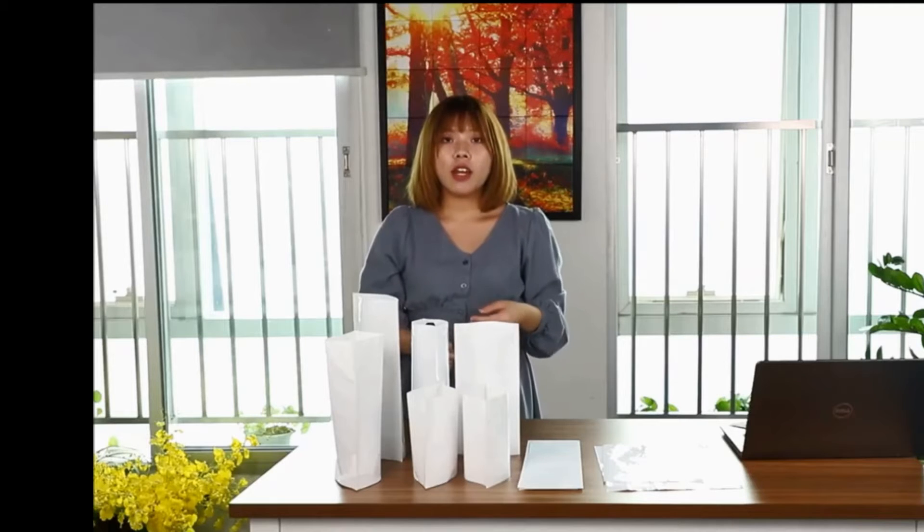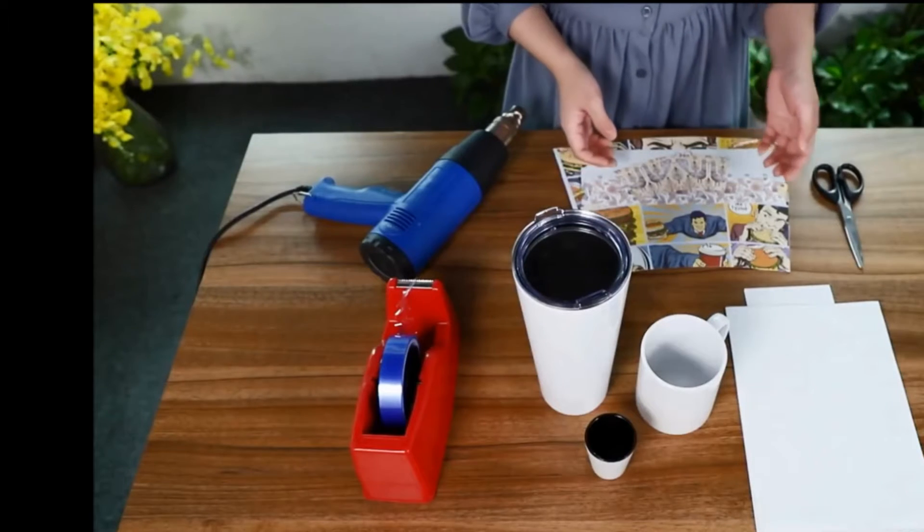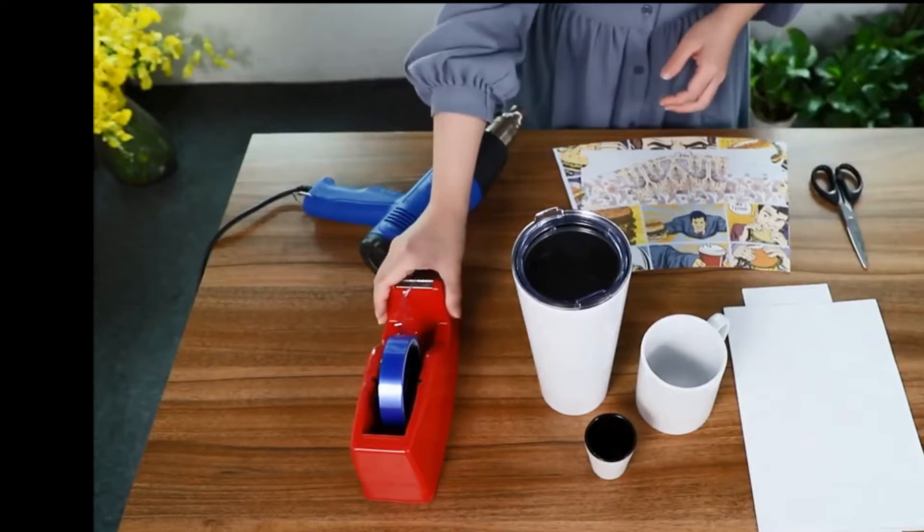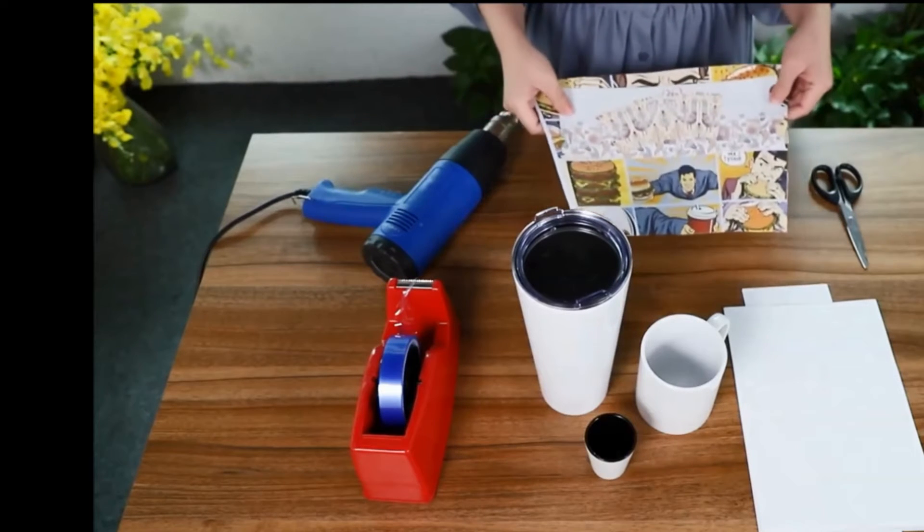So next, let's see how shrink films work. Here are my tools: shrink films, scissors, thermal tape, and a heat blower gun. And these are my images.